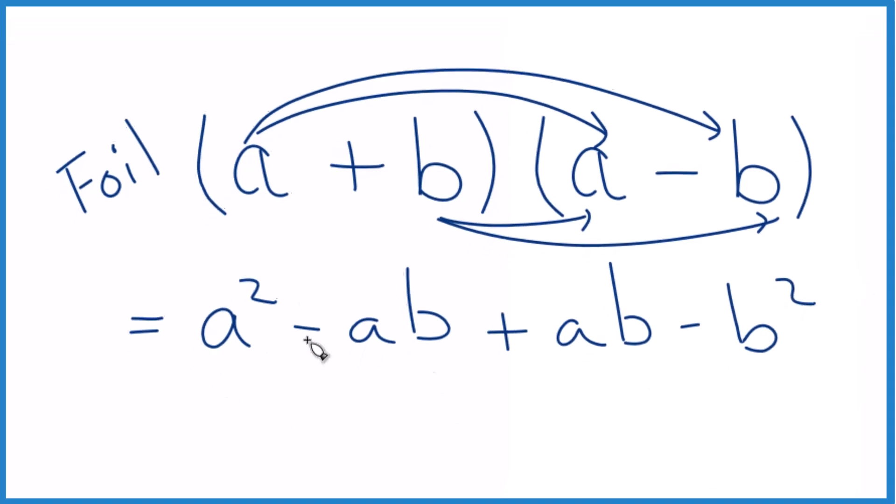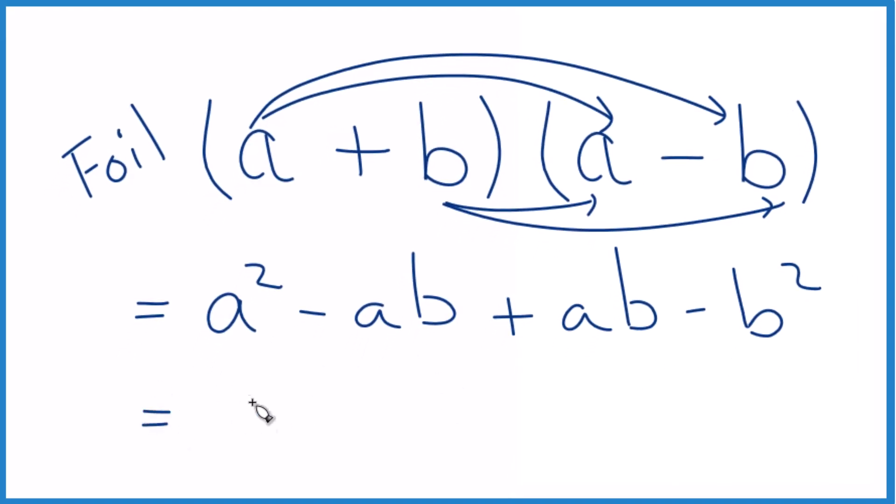So at this point, we can add up the similar terms here. We have a squared and negative ab plus ab. These cancel out, and we're left with a squared minus b squared.